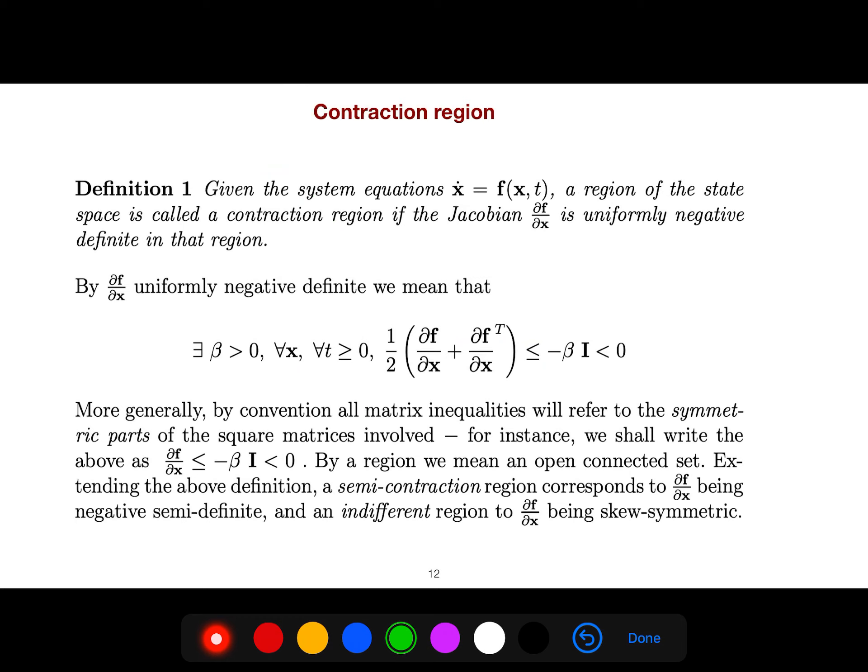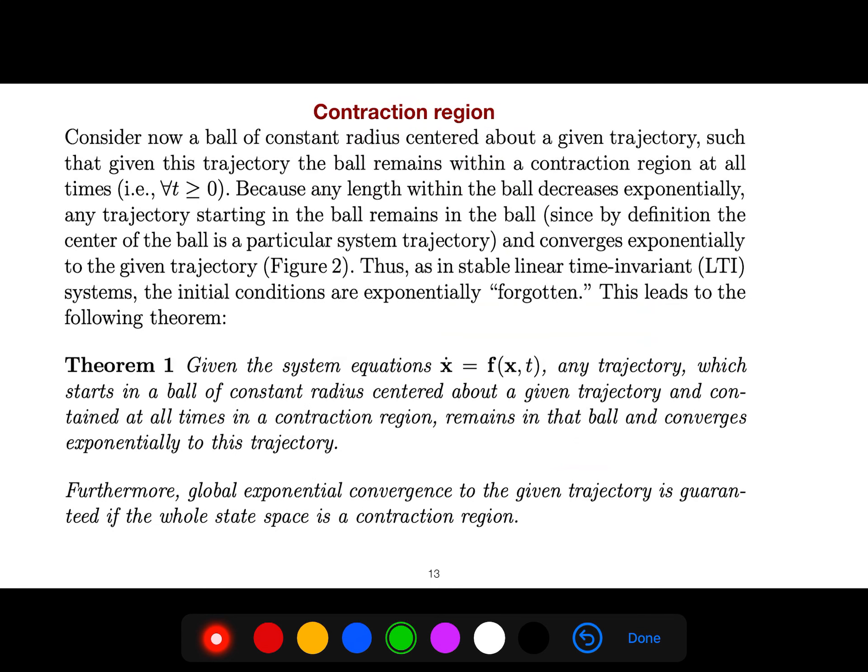There is a definition that says a region of the state space is called contraction region if the Jacobian is uniformly negative definite in that region. By negative definite we mean this. Given a system, any trajectory which starts in a ball of constant radius centered at a given trajectory and contained at all times in a contraction region remains in that ball and converges exponentially to this region. Something around that and something inside that, they converge to each other eventually.